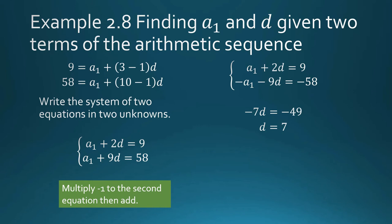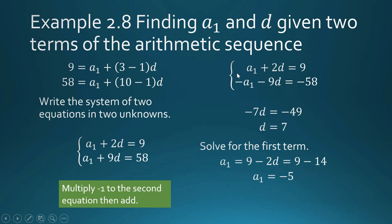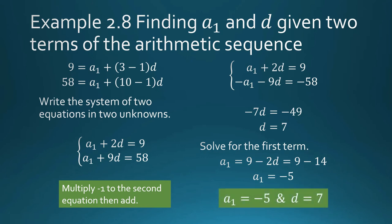Now that we have d, we use any of the equations in the system to find a sub 1. Using the first equation: a sub 1 = 9 − 2d = 9 − 14 = negative 5. So the first term is negative 5 and the common difference is 7.